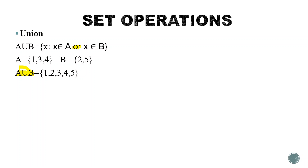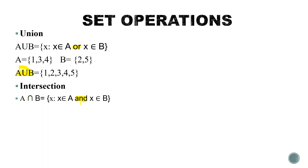The next operation is Intersection. A intersection B is defined as the set of all x such that x is an element of A and x is an element of B. This means the common elements of A and B. For example, if A equals {1, 2, 3, 4} and B equals {2, 4, 6}, the common elements are 2 and 4. So A intersection B equals {2, 4}.